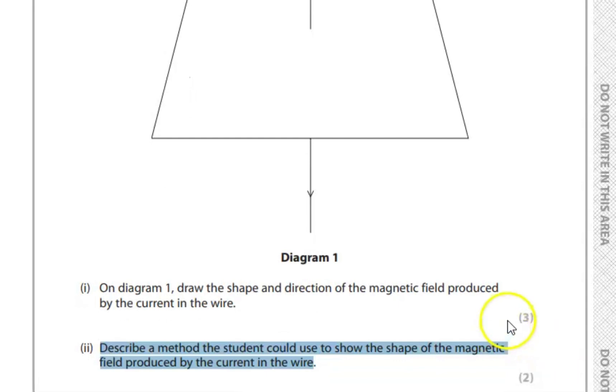On diagram one, draw the shape and direction of the magnetic field produced by the current in the wire. So we have to draw the magnetic field.